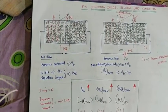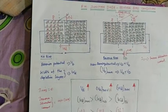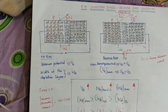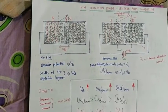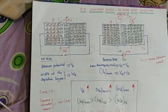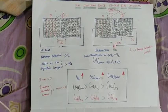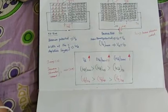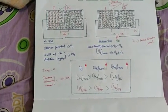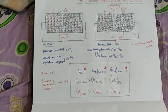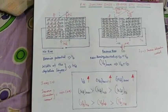Hi! In this video, our PN junction diode is reverse biased. In our previous video, the PN junction diode under no bias condition and forward bias condition was covered. In this video, we will see the reverse bias condition.